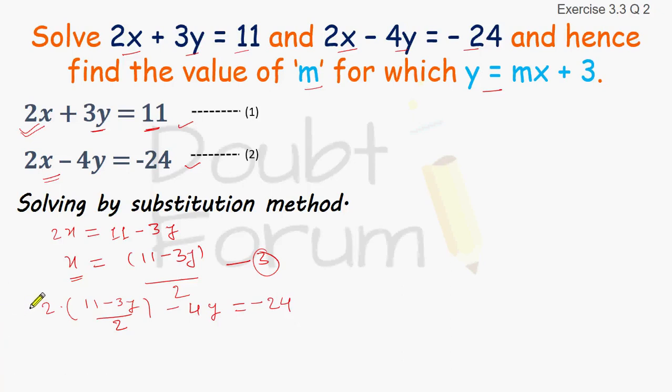Now we will solve this. The 2 and 2 get cancelled. What do we get? 11 minus 3y minus 4y equals minus 24. We will get 11 minus 3y minus 4y will make minus 7y equals minus 24.